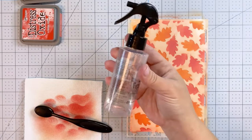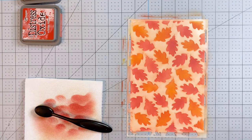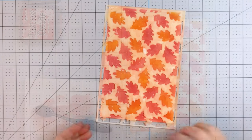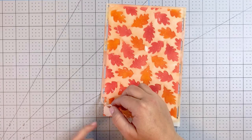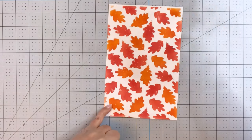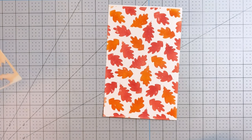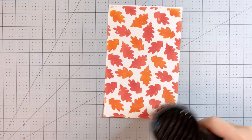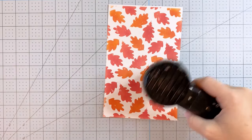Then I can go ahead and spritz here with a little bit of water and let it dry to get some fun texture going on with those leaves. And then when I peel up my stencil, you can see everything looks really seamless and beautiful. The colors kind of blend together.